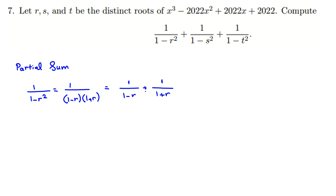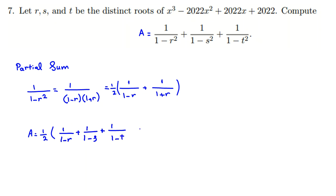So we call our target sum A. Then A = (1/2) × [1/(1−r) + 1/(1−s) + 1/(1−t) + 1/(1+r) + 1/(1+s) + 1/(1+t)]. To calculate each group, you need Vieta's formulas. That was the partial fraction step — now the next part requires Vieta's formulas.